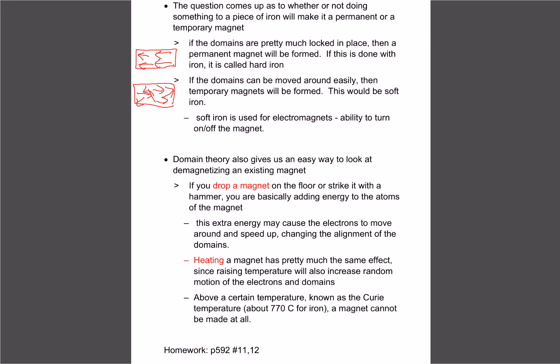What we can do is basically mess up the domains. If they're not pointing all in the same direction anymore, it's no longer a magnet, or we can just take a magnet and bump them a little bit so that some of the domains move, and it'll just become a weaker magnet.